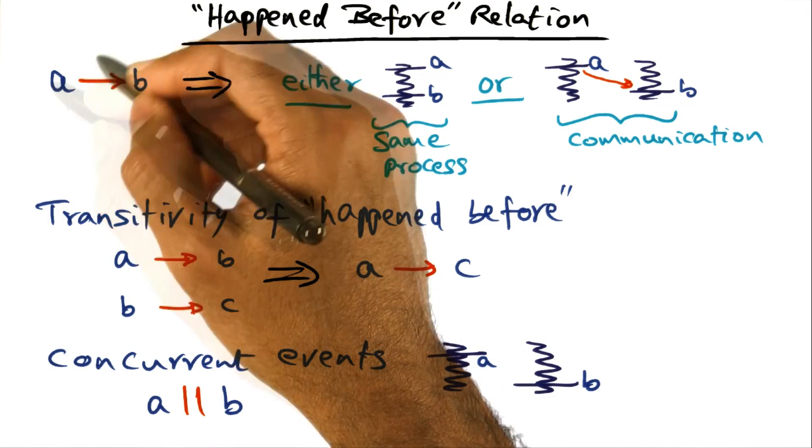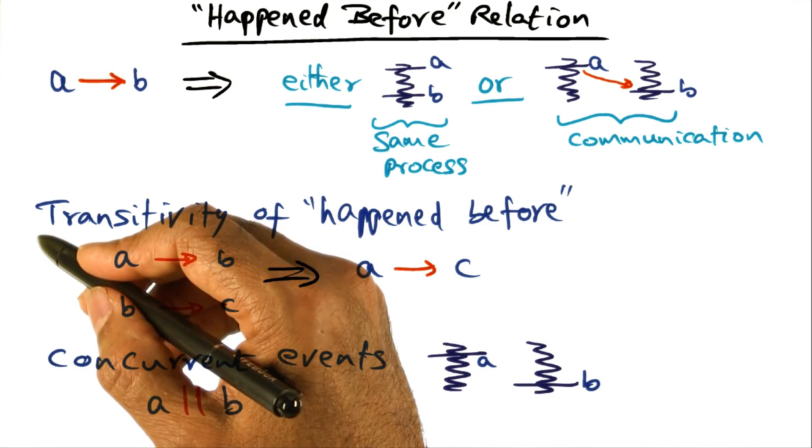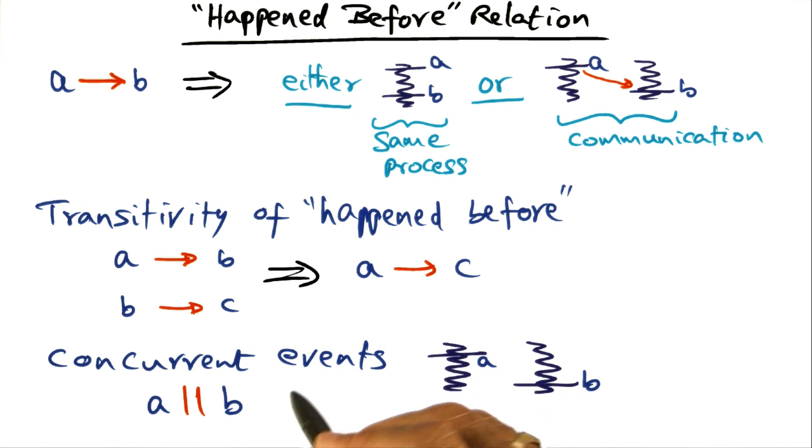Now that we understand the happen before relationship and the transitivity of happen before relationship, I also want to introduce this notion of concurrent events. That is, concurrent events are events in which there is no apparent relationship between the events.